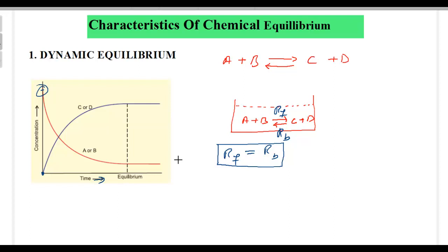The concentration of the products does not change either. It doesn't mean they are the same — rather, the concentrations just don't change further. So once you attain the state of equilibrium — this is the point, this is the time at which you attain equilibrium — after that, the concentration of the reactants and the products will remain the same with time. That will not increase or decrease. These are the products and these are the reactants.